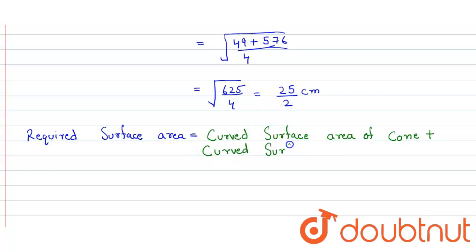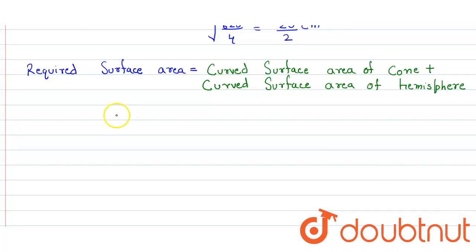We know that the curved surface area of cone, the formula for that is pi r l, plus the curved surface area of hemisphere, formula for that is 2 pi r square. Now we put the value: pi times r is 3.5 times slant height 25 upon 2, plus 2 times pi times radius 3.5 square.